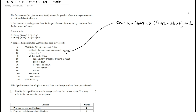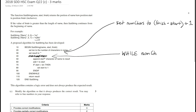We change the while loop condition: currently it reads 'while start is less than or equal to finish', which is what causes the infinite loop because that condition always evaluates to true. We remove that and replace it with 'while num_chars is greater than zero'. Then, just before the end while statement, we add a line that subtracts one from num_chars: num_chars equals num_chars minus one.